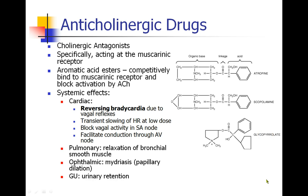We do sometimes see a paradoxic effect where a low dose of atropine can cause slowing of the heart rate, possibly due to selective inhibition of transmission through the AV node. In general, anticholinergic drugs block vagal activity in the SA node, which increases heart rate and facilitates conduction through the AV node, improving transmission of heart rate into the ventricles.